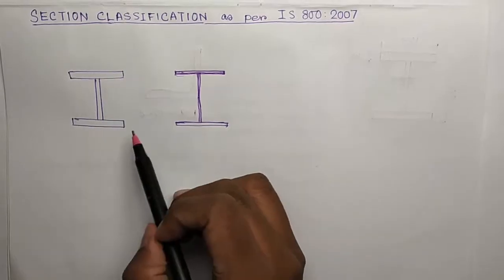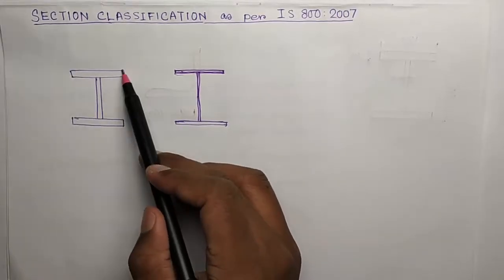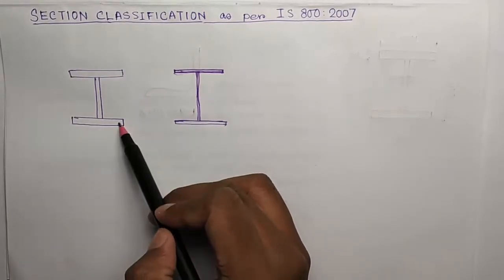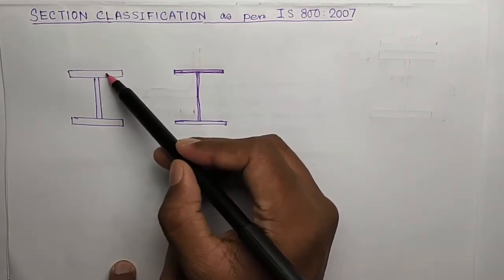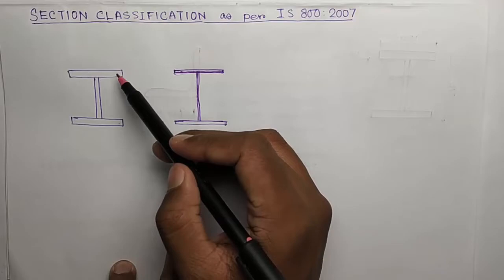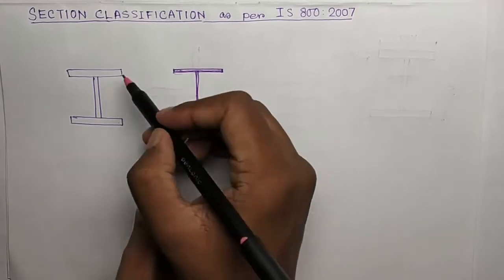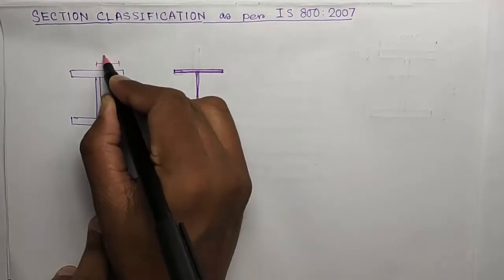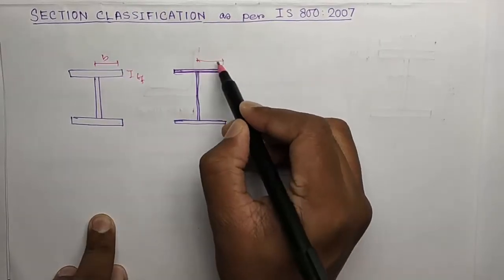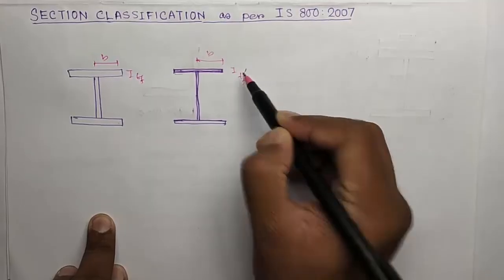So you see this is a built-up section consisting of three plates. These two are flange plates and this is web plate. So this plate can locally buckle due to loads. Whether it will buckle or not is very much dependent on its width to thickness ratio. Suppose this width is B and this is TF, and in this case this is same B but this TF dash is less.